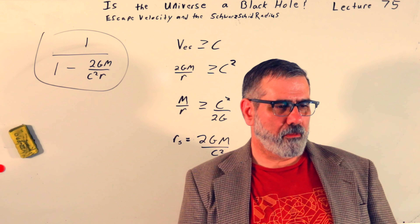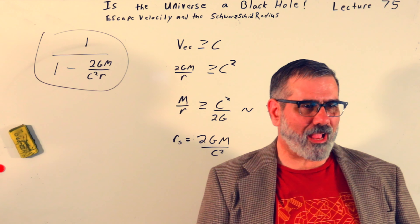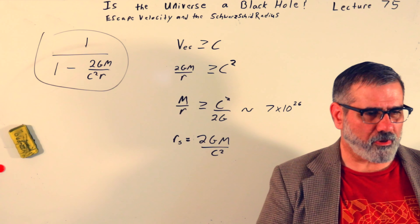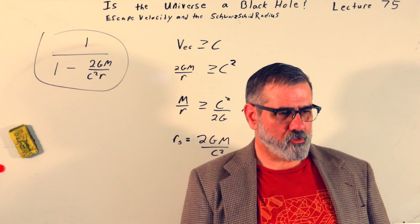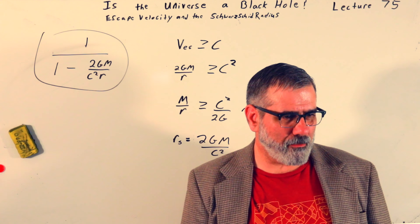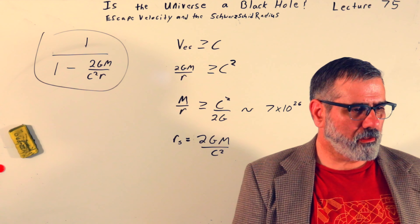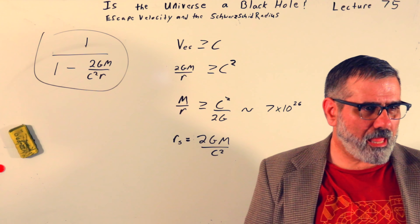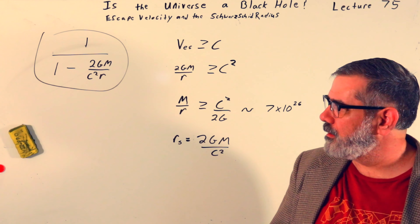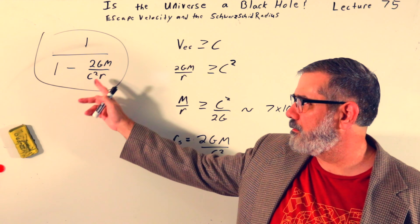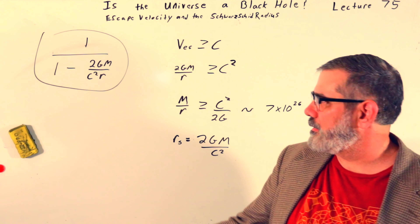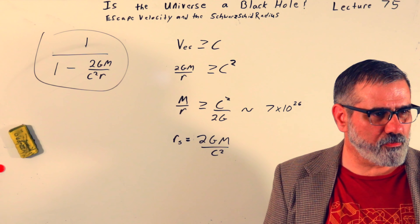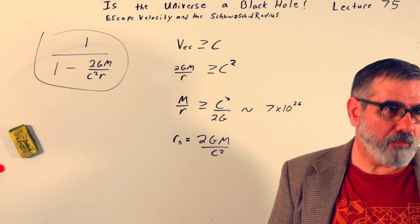Then sometime later — maybe the forties, fifties, or sixties — this idea of a black hole was proposed. It's a relatively new idea. As you may know, black holes have since been verified and we even have an image of one, taken a few years ago. You might wonder: if it's black, how do you take an image of it? That's a complicated question we'll discuss when we talk about general relativity and space-time diagrams.